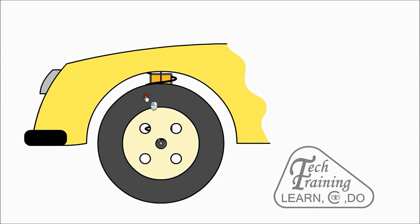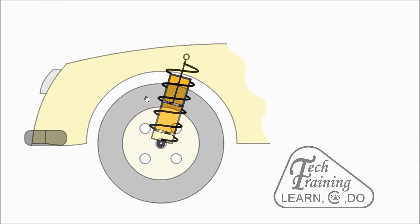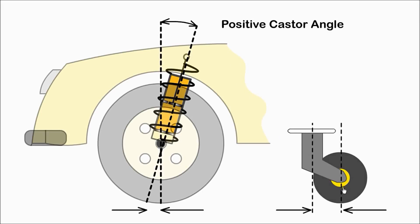Caster is the angle between a line extending through the steering pivot axis and a vertical line through the centre of the wheel. When the steering pivot axis meets the road in front of the wheel contact point, it will result in an inbuilt tendency to travel in a straight line. With a T-trolley, the wheels always follow the direction in which the trolley is pushed. Most cars have positive caster.